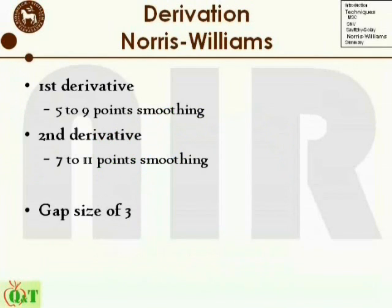As for Savitzky-Golay, the number of points used in the smoothing should be between five and nine for the first derivative and seven to eleven for the second derivative. In general, a gap size of three seems to give good estimates of the derivative.